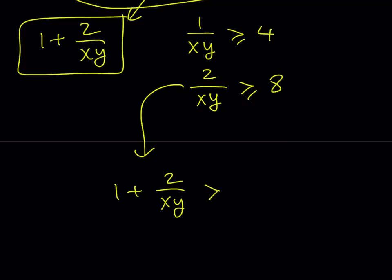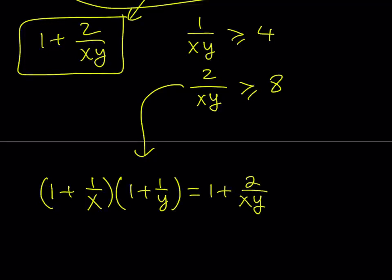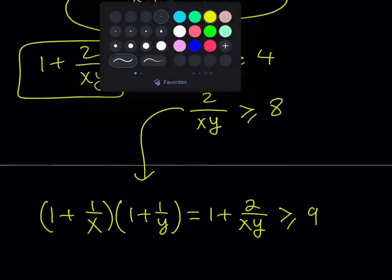By the way, let me just tell you that this is not just like an implication. It's not, we're not just trying to go backwards. But notice that 1 plus 2 over xy. So I should probably write it this way. My original expression was 1 plus 1 over x times 1 plus 1 over y. And we found that this is equal to 1 plus 2 over xy. And we just found out that this is greater than or equal to 9. Which implies that my original expression is greater than or equal to 9. And this brings us to the end of this video.